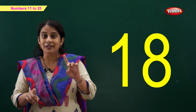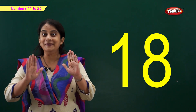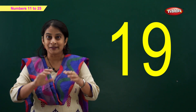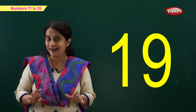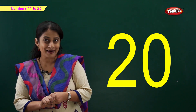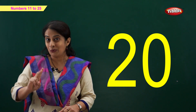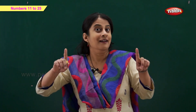Number 18: 1 and 8 becomes 18. Number 19: 1 and 9 is 19. And now a new number — number 20! That is 2 and 0, becomes 20. 11, 12, 13, 14, 15, 16, 17, 18, 19, 20.